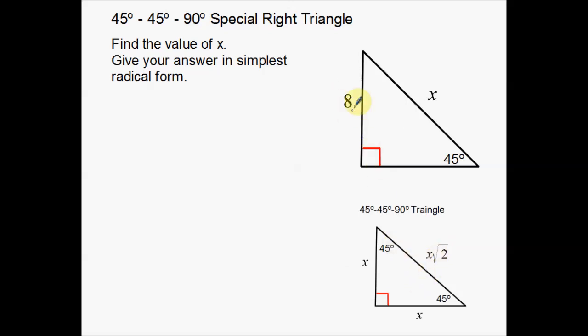So in this case this one's actually pretty easy to find. x in this case is going to be equal to 8 root 2. I take 8 and multiply it times the square root of 2 to get to the hypotenuse.